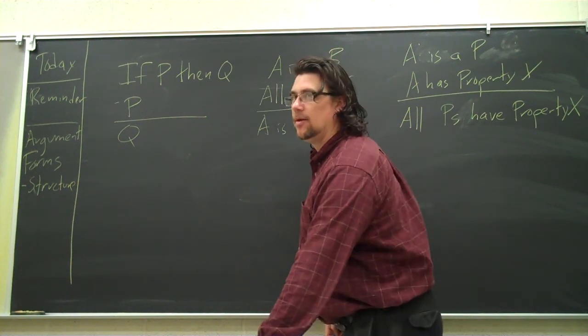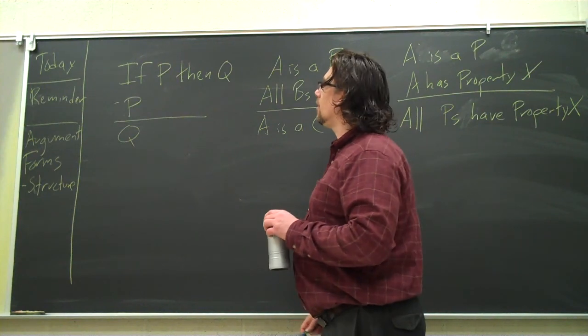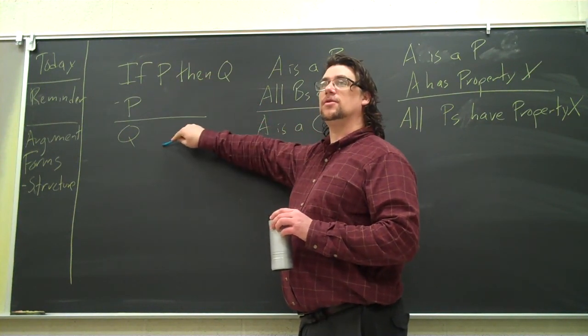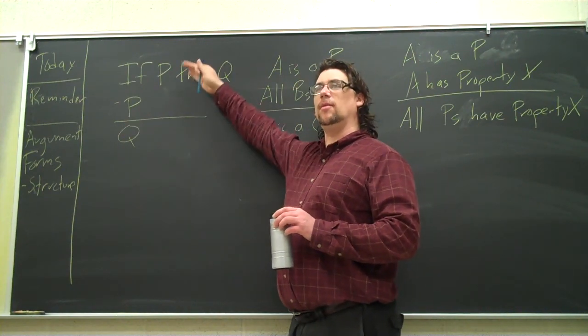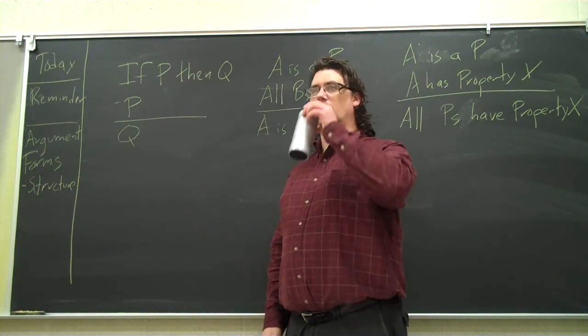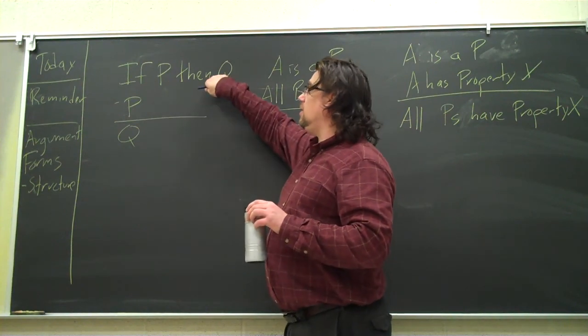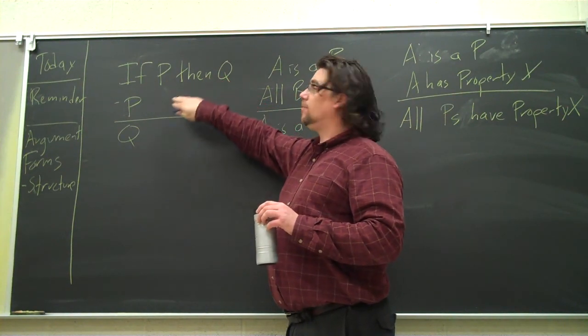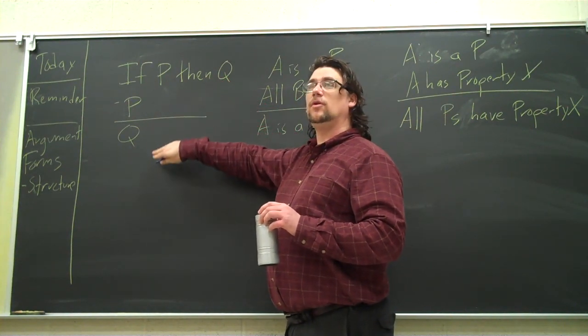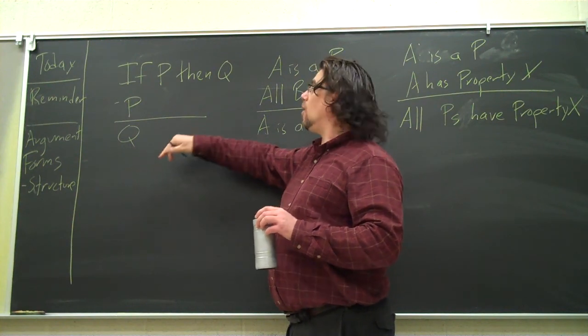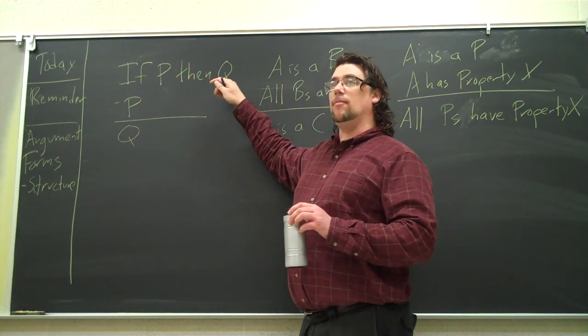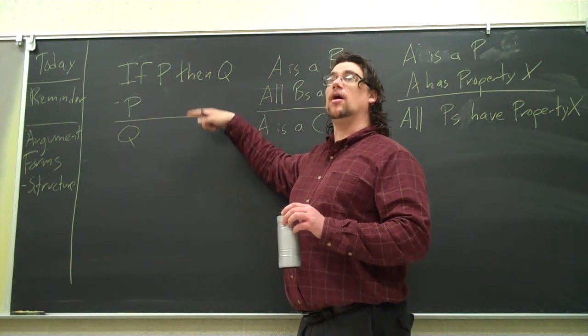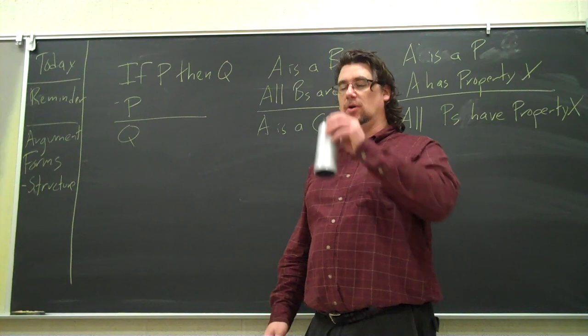Is P always the premise and Q always the conclusion? These are both premises, and this is the conclusion. When we draw this line, that means we're separating premises from conclusion. P and Q are the premise and Q is the conclusion. If P then Q is a premise, P is a premise, Q is the conclusion. If we wanted to we could put P, Q, if P then Q. It's not what they are but where they are that determines whether they're premises or conclusions.